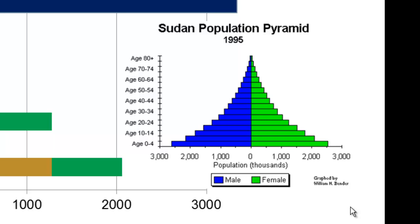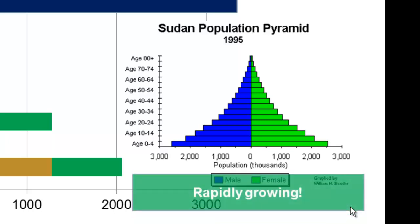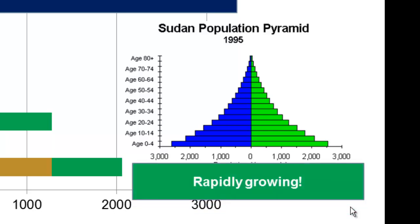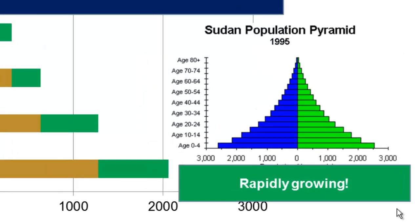Here's a population pyramid of Sudan. The population over age 60 is quite slight, whereas it's very broad from age zero to four. This is not just mortality — partly what we're seeing is a rapidly growing population, and that's why the population pyramid is so broad at the bottom.